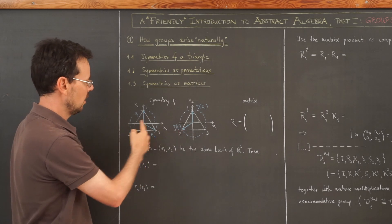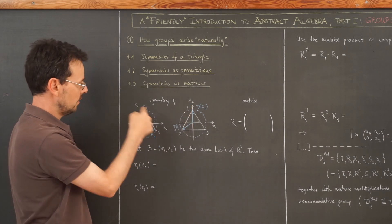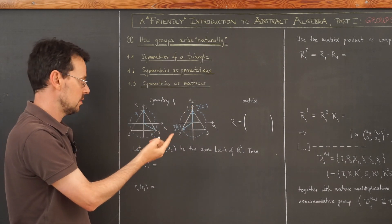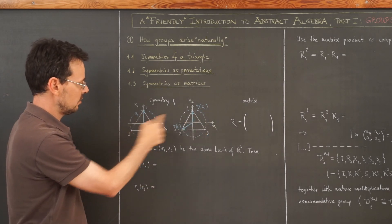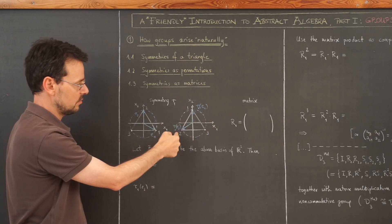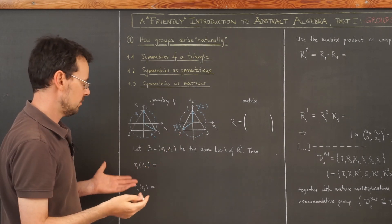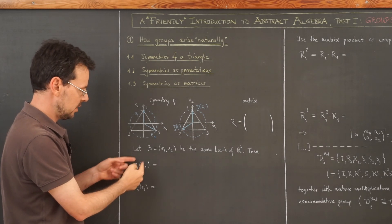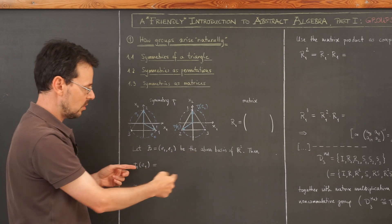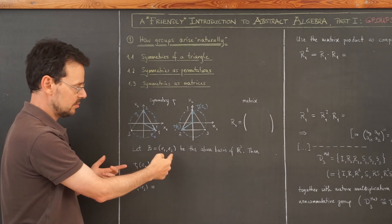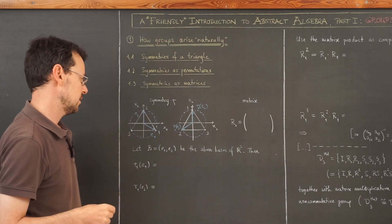This vector here gets mapped to the second basis vector, which is very good because it gives me a simple matrix. And this vector here goes to this vector. And now all we have to do is to write down what this linear transformation does to the basis vectors, find the coordinate representation in this basis again, and then we already have the columns of the matrix.